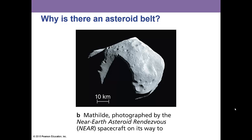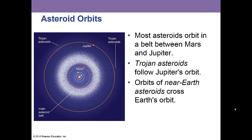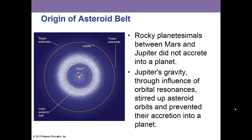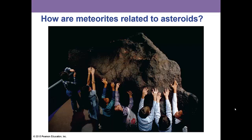We know that the asteroids are between Mars and Jupiter. Why is there an asteroid belt there? Most asteroids are between Mars and Jupiter, though there are some Trojan asteroids that follow Jupiter's orbit. Some near-Earth asteroid orbits cross Earth's orbit, and we need to watch out for those. Rocky planetesimals early on between Mars and Jupiter did not accrete into a planet — Jupiter's gravity, through orbital resonance, stirred up asteroid orbits and prevented their accretion into a planet.